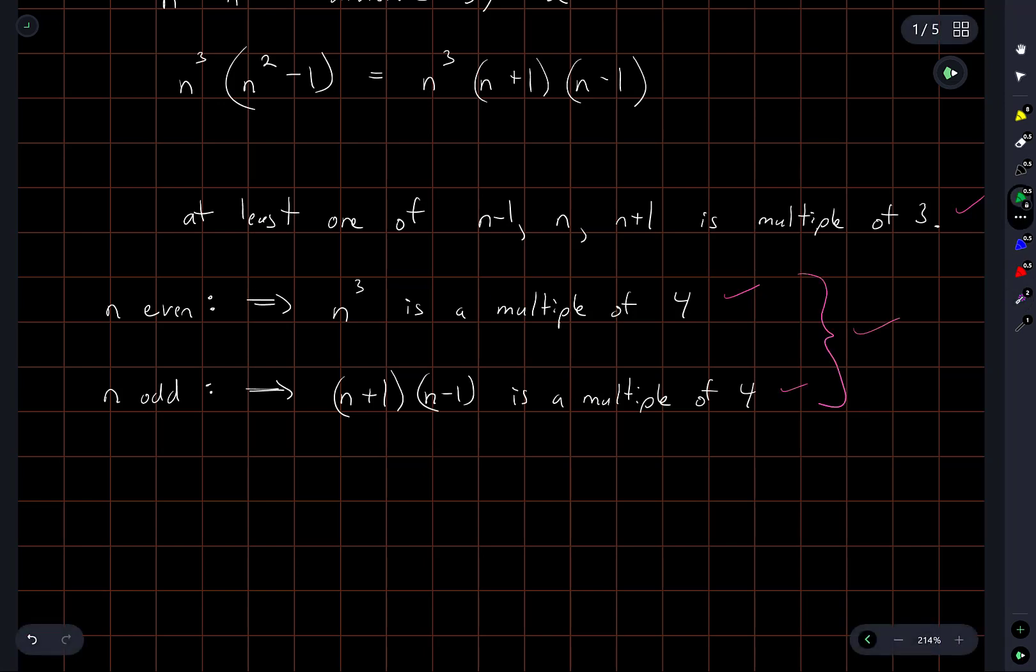So we've handled all the possible cases to get our multiple of 4, and so no matter how these three things are arranged, whether n is even or odd, we have at least one multiple of 3 and we'll get our multiple of 4 in here. So this shows that n to the 5 minus n cubed is divisible by both 3 and 4.